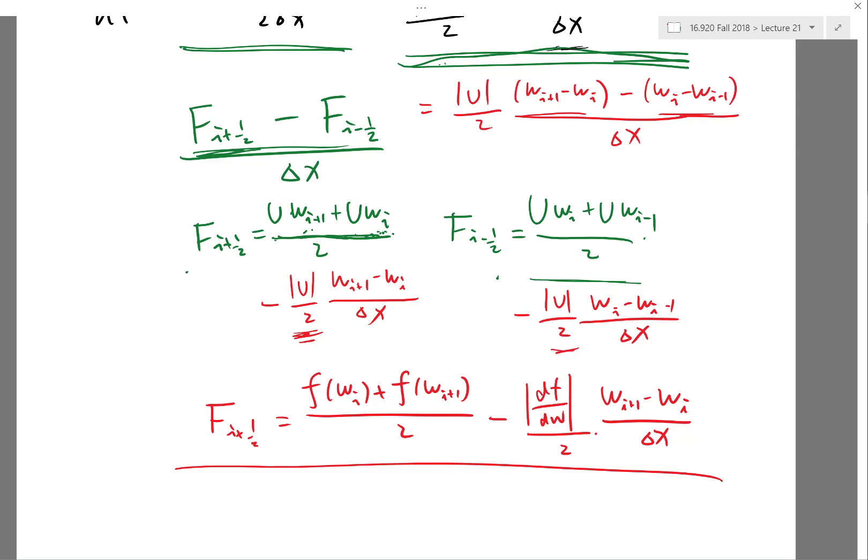That's going to be generalized to the system of equations case, in which instead of taking the absolute value of a scalar derivative, you can take a certain norm of a matrix derivative. If f is a vector and w is a vector, df/dw would get you a matrix.